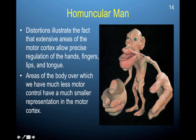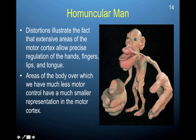If we translate the homunculus in our motor cortex to an actual physical person, these distortions illustrate the fact that extensive areas of the motor cortex allow precise regulation of the hands, fingers, lips, and tongue. The hands are disproportionately large to reflect how large they are in the motor cortex, and the same goes for the lips and tongue, which are primary sources of incoming sensory information. The rest of the body is comparatively smaller, reflecting less representation in the motor cortex.